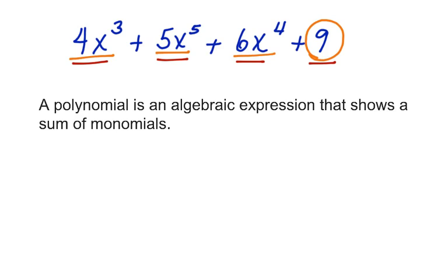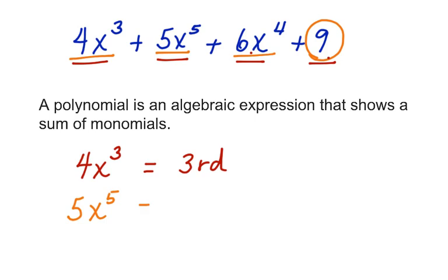First term, second term, third term, and the fourth term. You can classify each term by its exponent. Looking at the first term, 4x to the third is a third degree term, because the exponent is three. 5x to the fifth has an exponent that is the fifth degree. And 6x to the fourth is the fourth degree term. Now, nine is a constant — it doesn't have a variable, so it doesn't have a degree. It is just part of the polynomial.